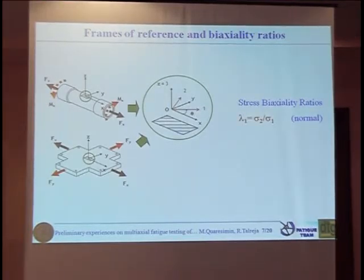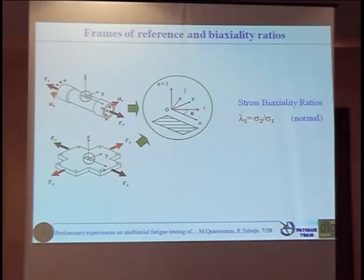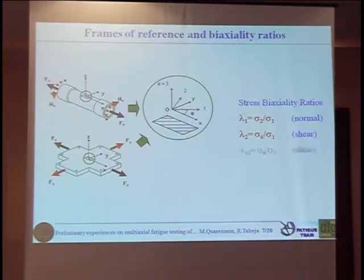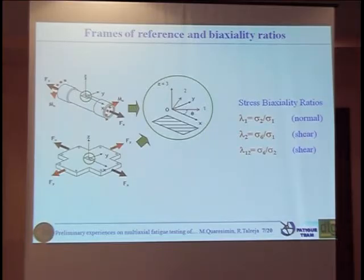Just a couple of reference conditions: dealing with composites, you have to consider the typical condition associated to multi-axial loading, together with the peculiar stress state generated by the material's anisotropic behavior. It could be useful to define the bi-axiality ratio in terms of material frame of reference. We can consider the first bi-axiality ratio as the ratio between the transverse to normal stress; the shear bi-axiality ratio as the ratio between shear over normal stress; and we also introduced a new shear bi-axiality ratio concerned with the ratio between the shear component applied to the sample and the transversal normal stress — a quite unusual condition, with probably only one paper in the literature dealing with this specific case.